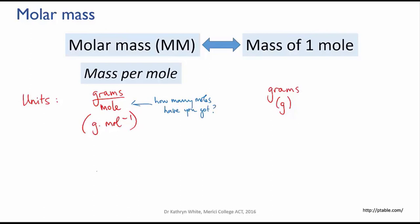So this is the relationship. The molar mass of a substance in grams per mole equals the mass in grams divided by the moles in mole.